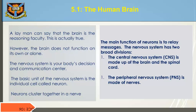A layman can say that the brain is a reasoning faculty. This is actually true. However, the brain does not function on its own or alone. The nervous system is your body's decision and communication center. The basic unit of the nervous system is the individual cell called a neuron. Neurons cluster together in a nerve. The main function of neurons is to relay messages. The nervous system has two broad divisions: 1. The central nervous system (CNS), which is made up of the brain and the spinal cord.